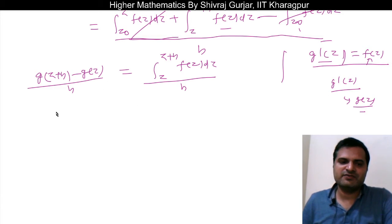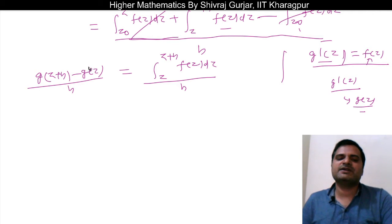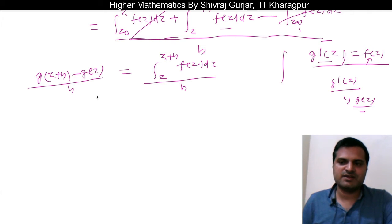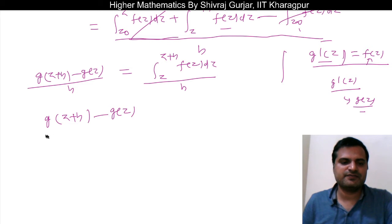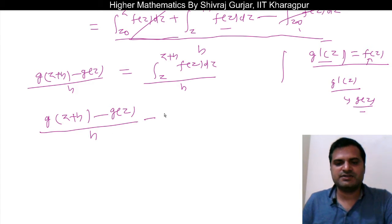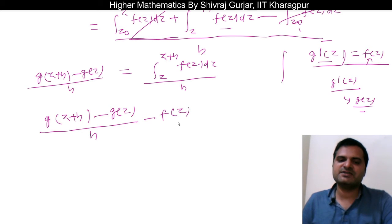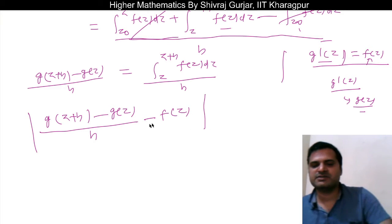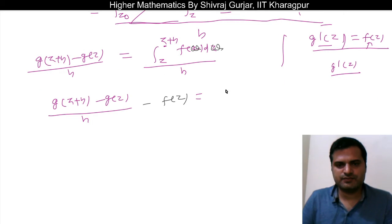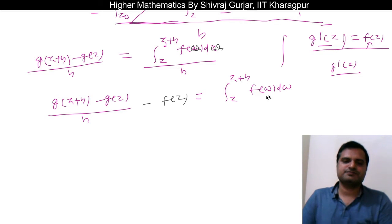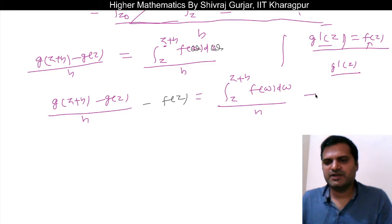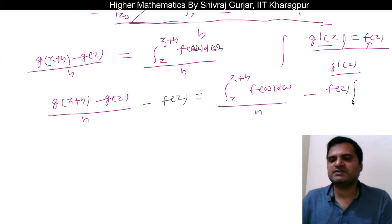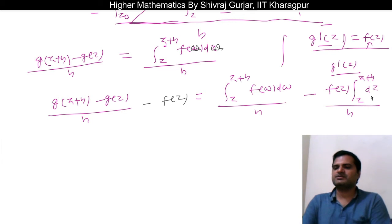We are seeking to show that g'(z) equals f(z), which will make f(z) analytic. For that, let us consider [g(z+h) - g(z)] / h minus f(z). We can write f(z) as the integral from z to z+h of f(z)dz divided by h, because the h terms cancel. Now if we take modulus from both sides, we want to show that when h tends to 0, this whole term approaches 0.